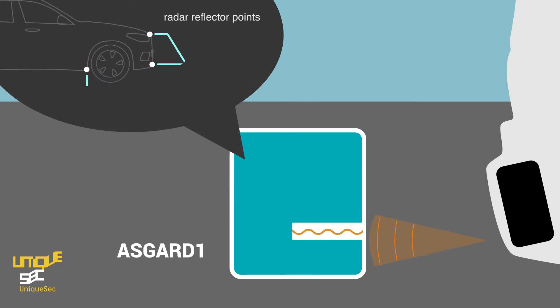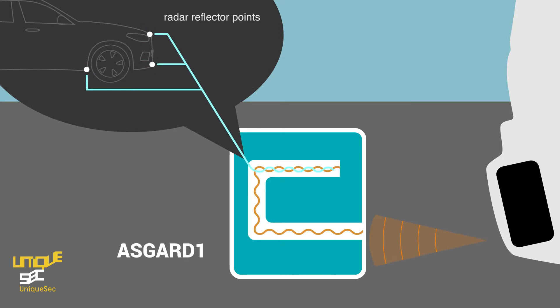Angle, speed and distance of those points are added to the signal in the spectrum domain, creating a perfect illusion of a real traffic situation.